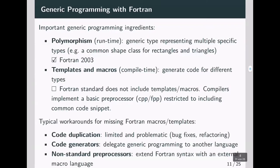So what are typical workarounds in Fortran? Either you do code duplication, so you write the same code again and again, which is problematic because then you start fixing bugs in double precision but the single precision implementation still has the same bug. You have code generators where you delegate the generic programming to another language. And you have external preprocessors which extend the Fortran syntax with an external macro language. Actually I opt for the third because I think it's the most easy and safe to use.